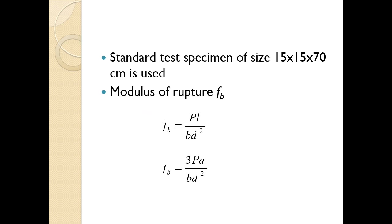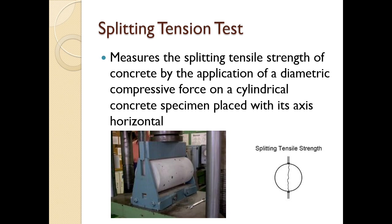As per the standard test, the beam is of size 15 by 15 by 70 centimeters. The modulus of rupture, FB, is given by the standard equation. You have to study this equation and understand the procedure for the flexure strength test, which we have already covered earlier.